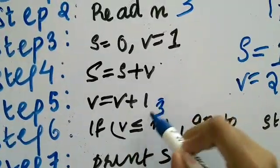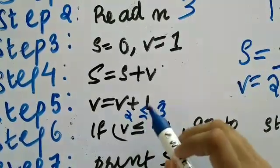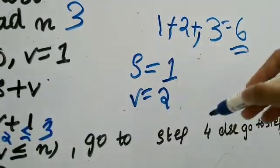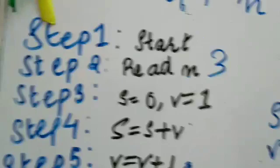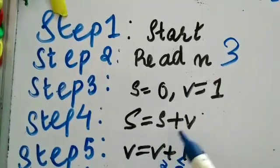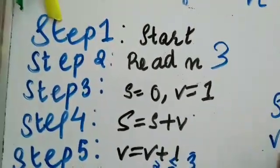v is 2. Is 2 less than or equal to 3? Yes, 2 is less than 3, right? So we are asked to, we have to go to step 4. What is step 4? Step 4 is, s is equal to s plus v.